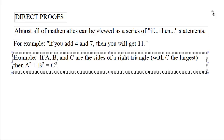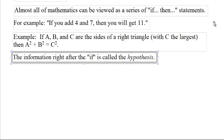For example, if a, b, and c are the sides of a right triangle, with c the largest, then a squared plus b squared equals c squared. That's the Pythagorean Theorem written as an if-then statement.